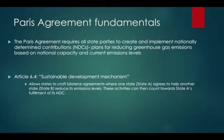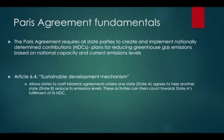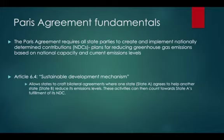There's a really cool article in the Paris Agreement — Article 6.4, called the Sustainable Development Mechanism. This mechanism is designed to facilitate international cooperation for greenhouse gas emissions reduction and sustainable development promotion. Basically, the mechanism allows states to craft bilateral agreements where one state, let's call it State A, agrees to help another state, State B, reduce its emissions levels. These activities can then count towards State A's fulfillment of its NDC. So it acts as an incentive for states to cooperate to help each other reduce their respective emissions because they can basically get credit towards reaching their own NDC goals.